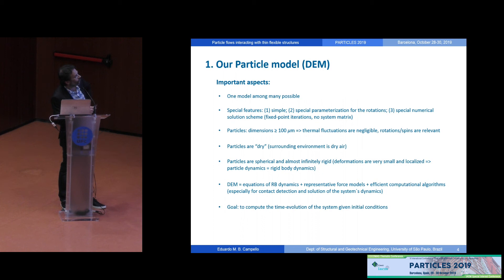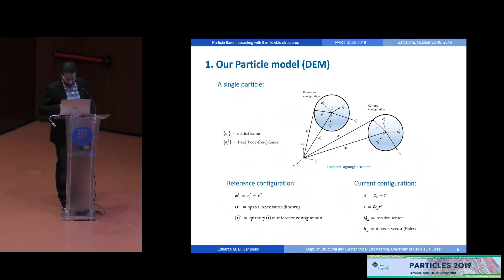So, for our particle model, first of all, this is just one model among many possible. But it is a model that has some special features. It is, at least in our opinion, simple. We make use of a special parametrization for the rotations of the particles. And also we use a special numerical solution scheme. It's a fixed point iteration scheme wherein there is no system matrix. I will show that. Also, as I said, the particles have dimensions at least of 100 microns. There we have these two things here. They are supposed to be dry. That is, the surrounding environment is supposed to be dry air. They are spherical and almost infinitely rigid. That is, the deformations that they experience are supposed to be very small and localized such that we have rigid body dynamics and this is a classical DEM scheme.